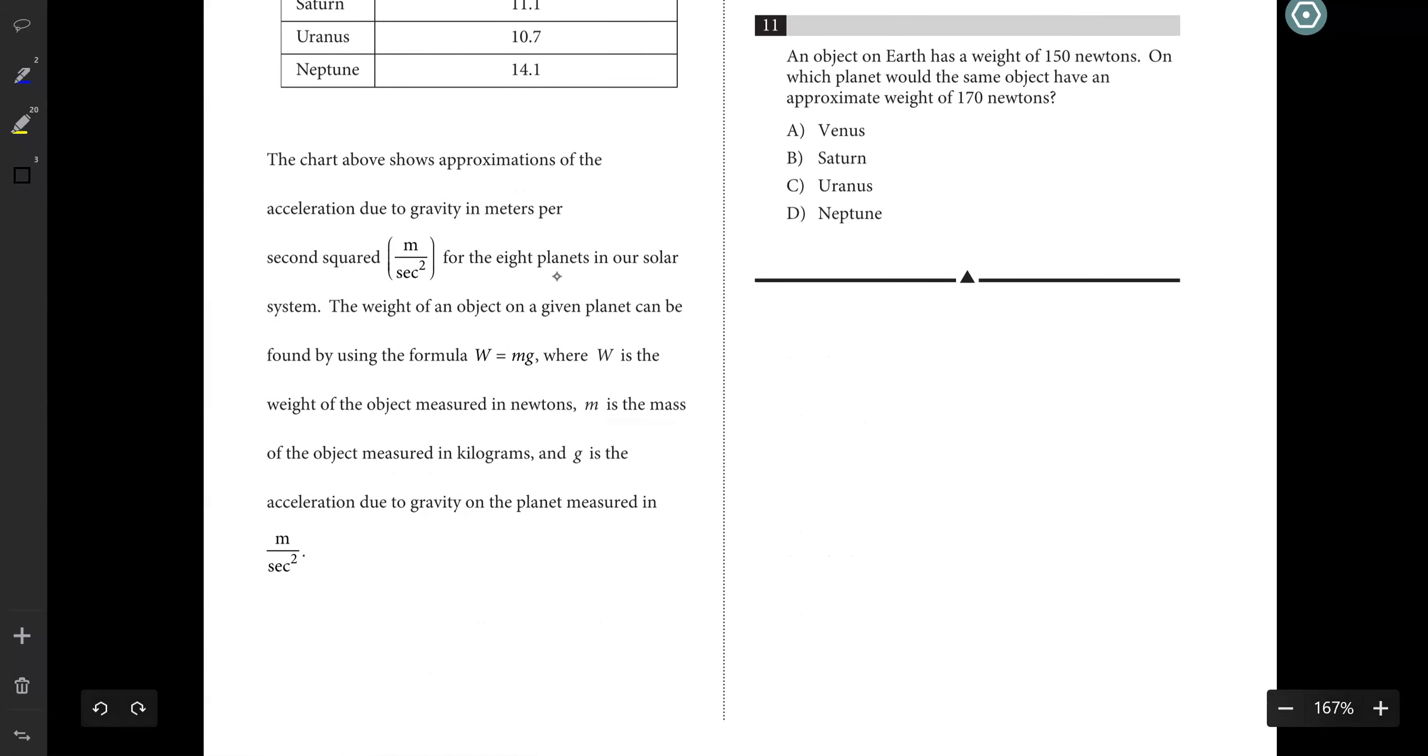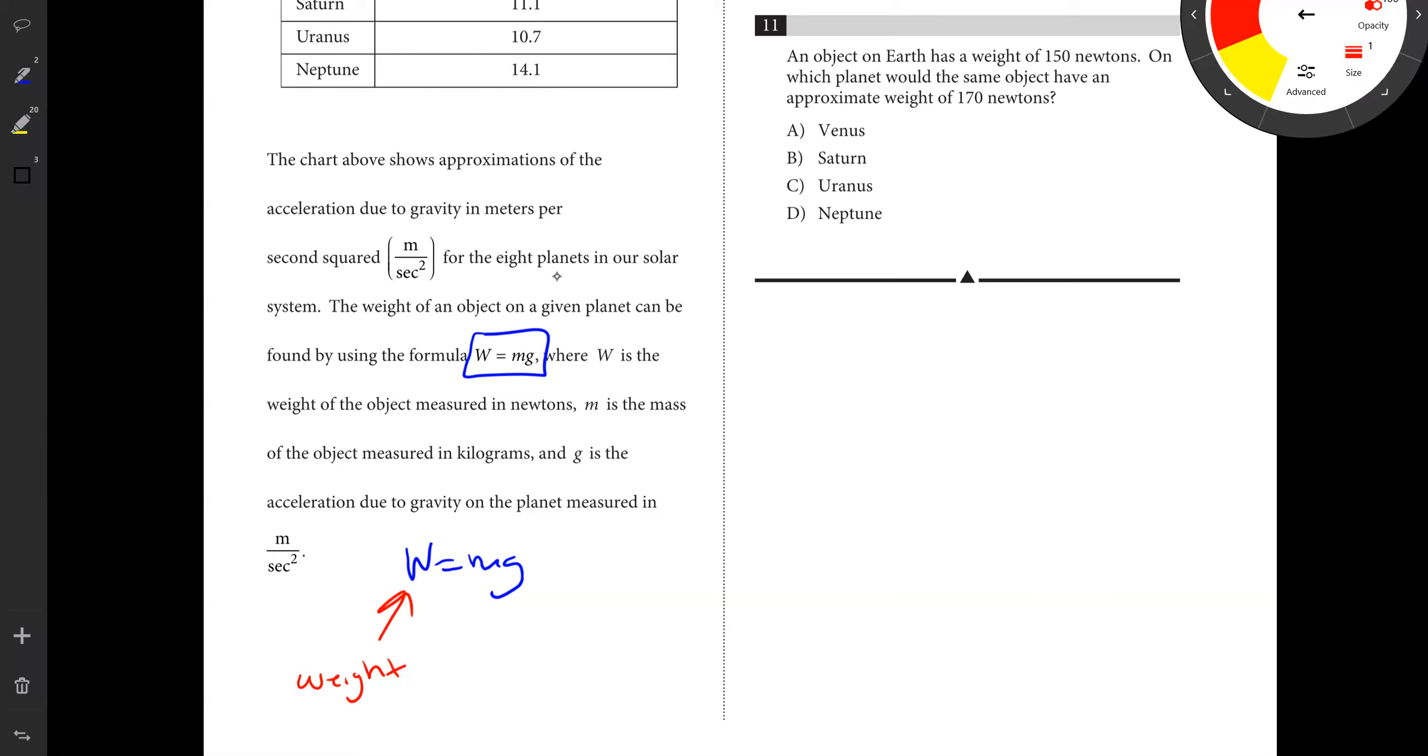We're going to start with problems number 10 and 11. Got this long paragraph, and really what happens in the end, all that matters is this last sentence. It says the weight of an object on a given planet can be found by using the formula W equals MG. Now that's our formula, W equals MG. And it describes what all of this stuff is. W is the weight, M is the mass, and G is the gravity on that planet.